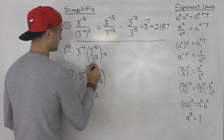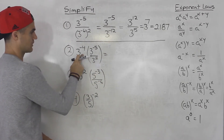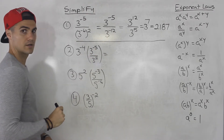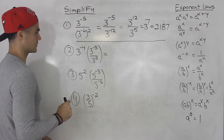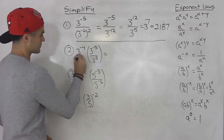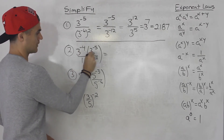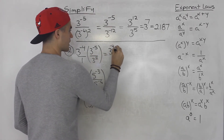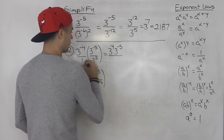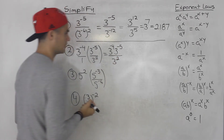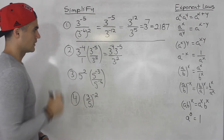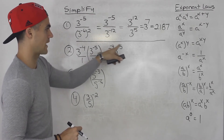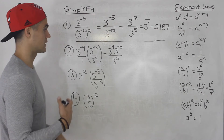Moving on to number 2, we have 3 to the power of negative 4 times the fraction 3 to the negative 5 over 3 to the 2. I can put 3 to the negative 4 over 1 and multiply the numerators and denominators. The numerator becomes 3 to the negative 4 times 3 to the negative 5, and adding exponents gives 3 to the negative 9.